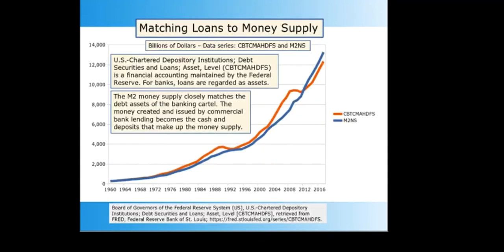Now we're going to match the loans to the money supply. The credit issued by commercial banks is regarded as their assets, since banks collect interest on these loans. As described earlier, these loans become the deposits that create the money supply. We see a very close relationship when we compare bank assets with the M2 money supply. After 2012, M2 is a bit higher than the bank assets, which is probably a result of the Federal Reserve Quantitative Easing Program begun after the 2008 financial crisis. The red line is bank assets and the blue line is the M2 money supply.